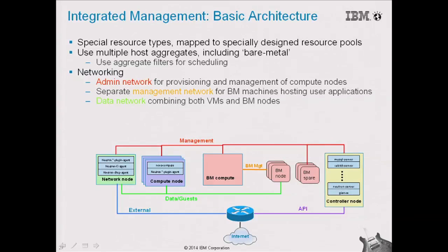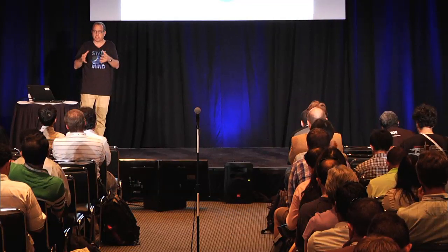There are two different roles for bare metal machines. Deploying a compute node on bare metal is an administrator role, but we also want to allow a regular user to deploy to bare metal machines without touching the whole management system. So we had to separate the management network from the data network, and there are challenges because we want that network to span both virtual machines and physical machines.